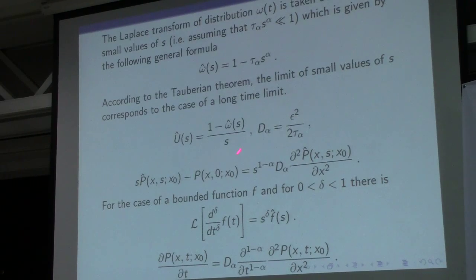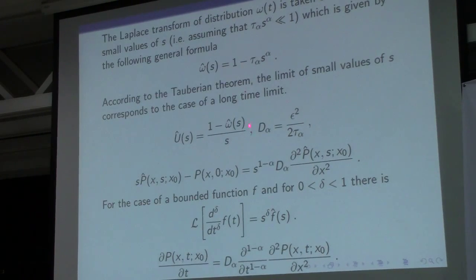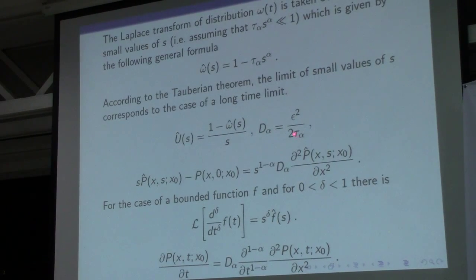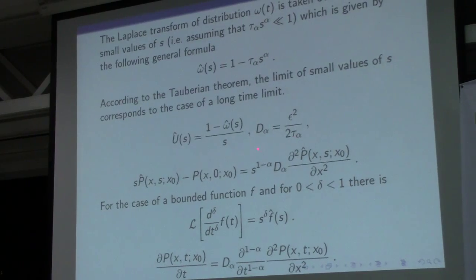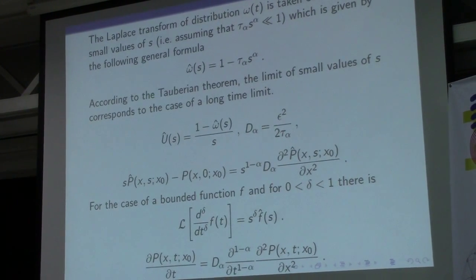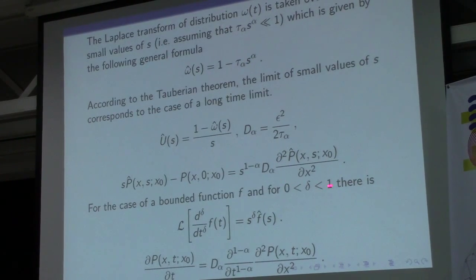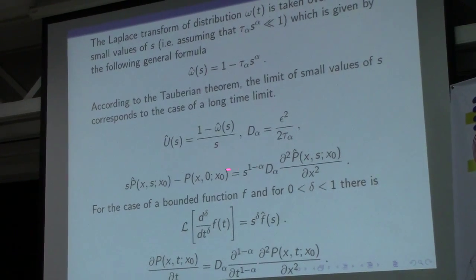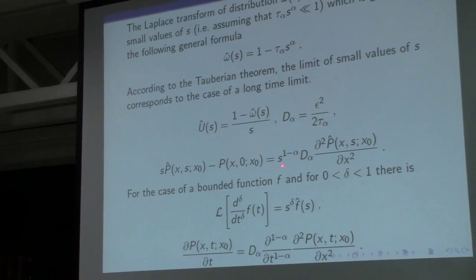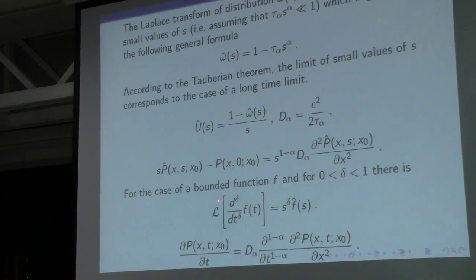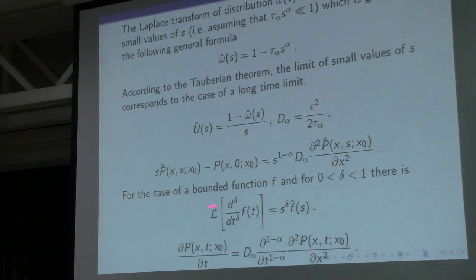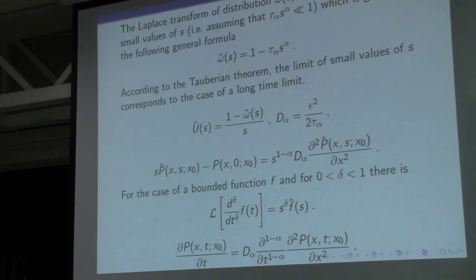The function Ψ is this probability, and its Laplace transform is given by standard functions, very easy to calculate. The sub-diffusion coefficient and the parameter alpha are defined as follows; tau_alpha is this parameter. After simple calculations, we get the following Laplace transform of the sub-diffusion equations, yielding the very simple sub-diffusion equation with a fractional time derivative.